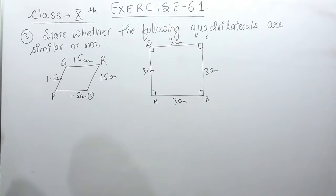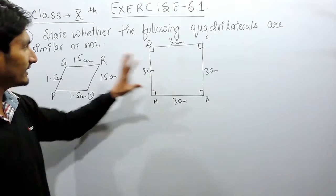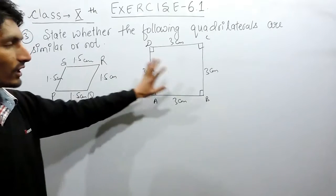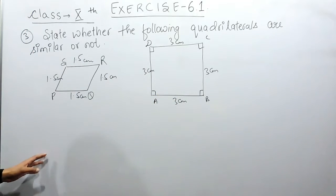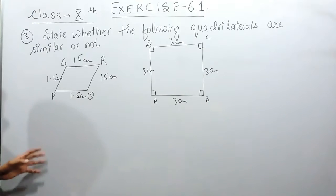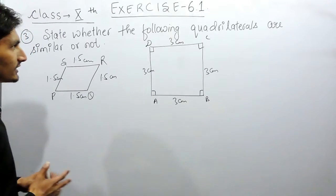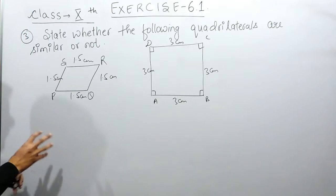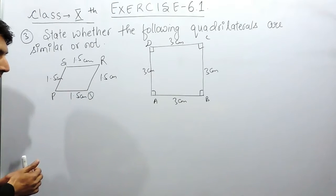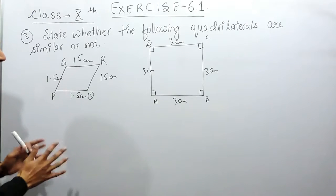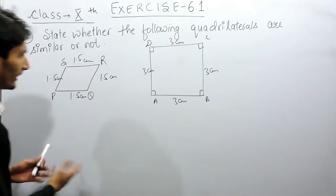Now you have to determine whether these two quadrilaterals are similar or not. We know that similar figures are those which look alike — meaning the shape of the two is the same, but the size can be different.